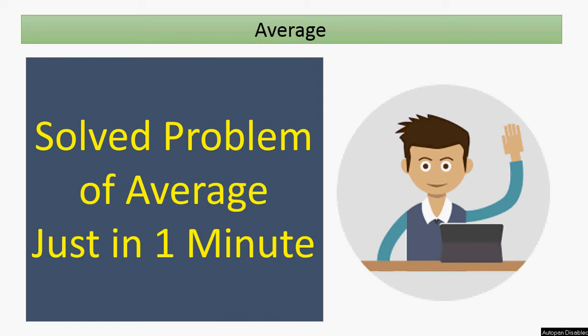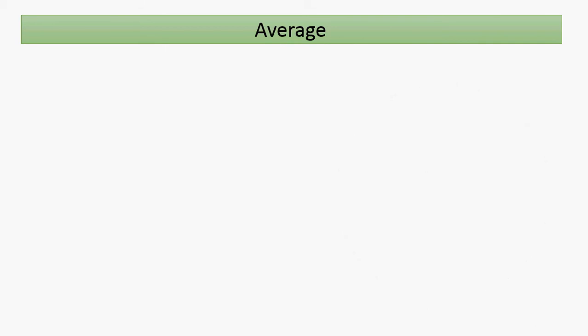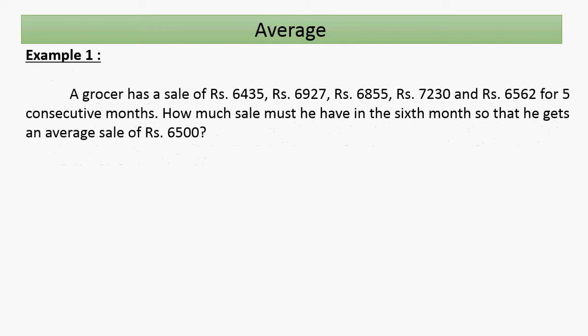Hello friends, let's solve problems on averages in just one minute. A grocer has sales of rupees 6435, 6927, 6855, 7230, and 6562 for five consecutive months. How much sale must he have in the sixth month so that he gets an average sale of rupees 6500?